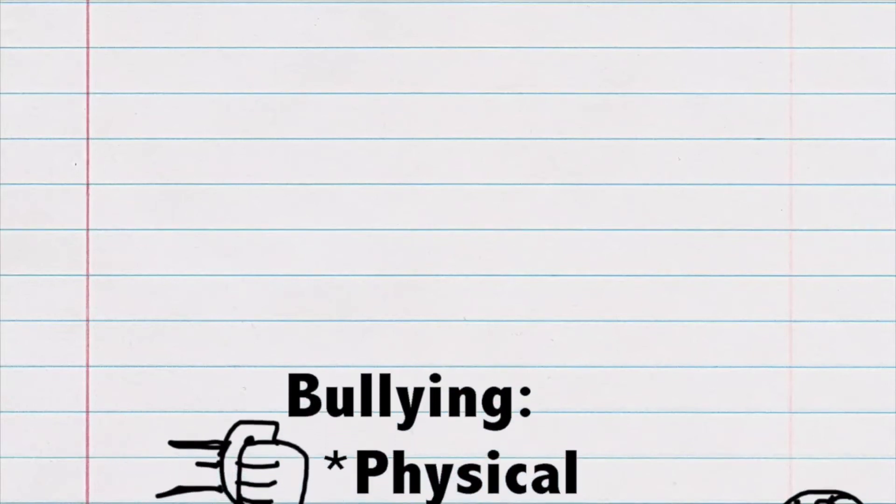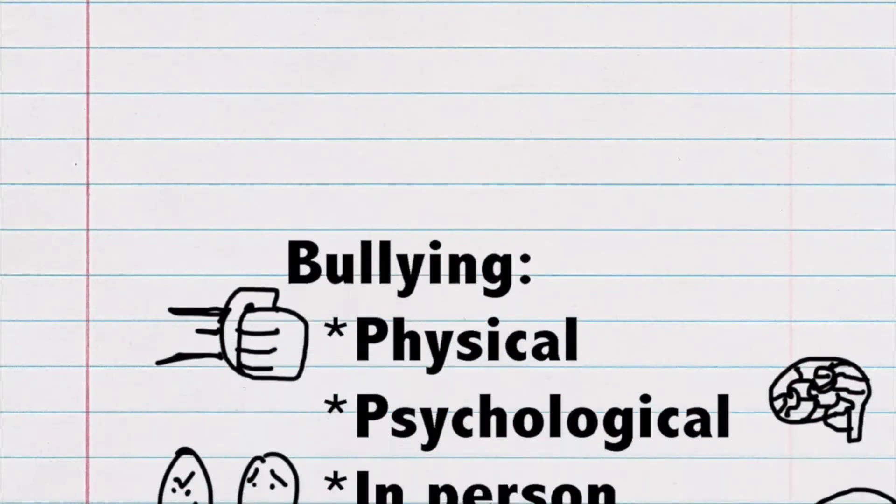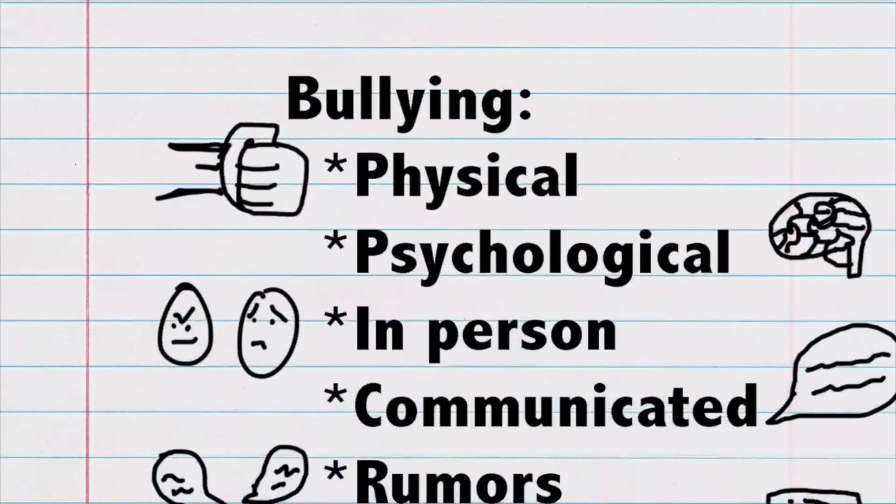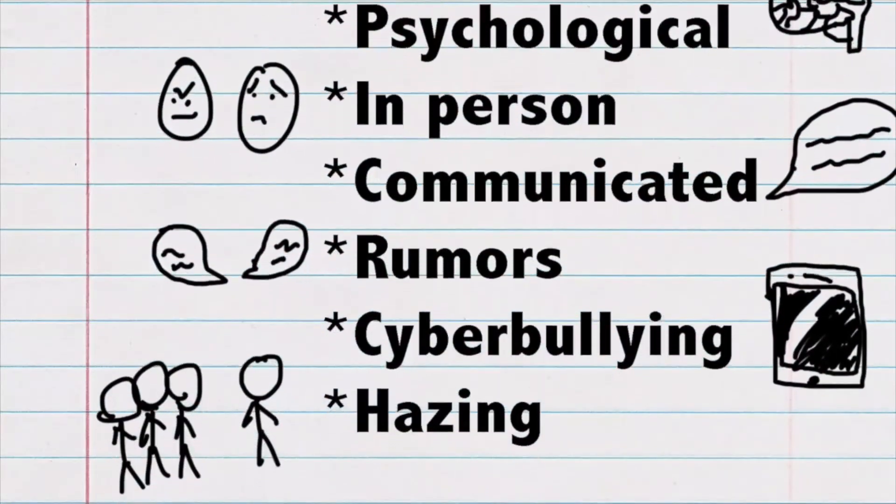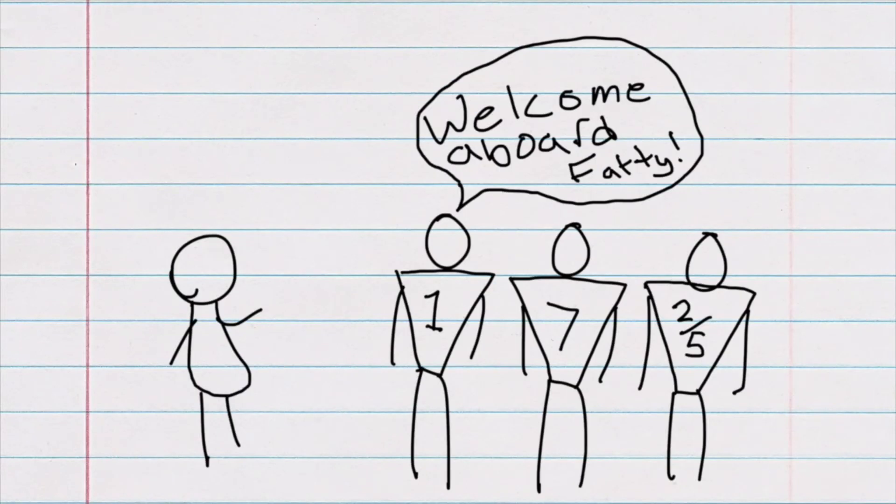Bullying might be physical or psychological. It may be conducted in person or using verbal or written communication, perhaps online or via other technology. Hazing is another form of bullying that endangers the safety, health, or well-being of a student for the purpose of initiation or acceptance in a school-sponsored team, organization, or event.